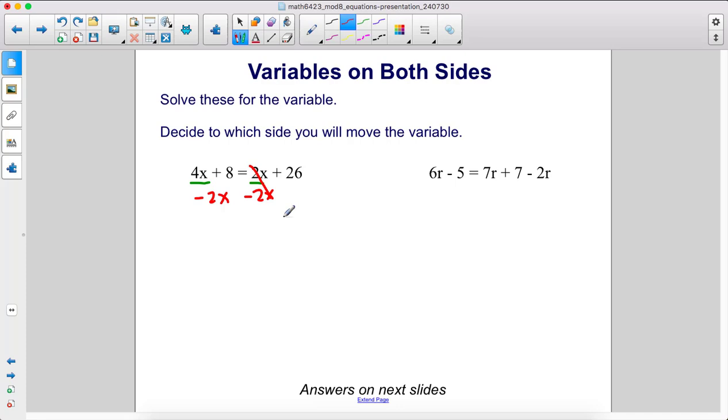It will go away over there. 4x minus 2x is 2x, and we still have plus 8 equals, and then we only have the 26 left. See how 2x is positive? That's useful. That's going to be better than moving the 4x to the other side and having negative 2x on the right side.